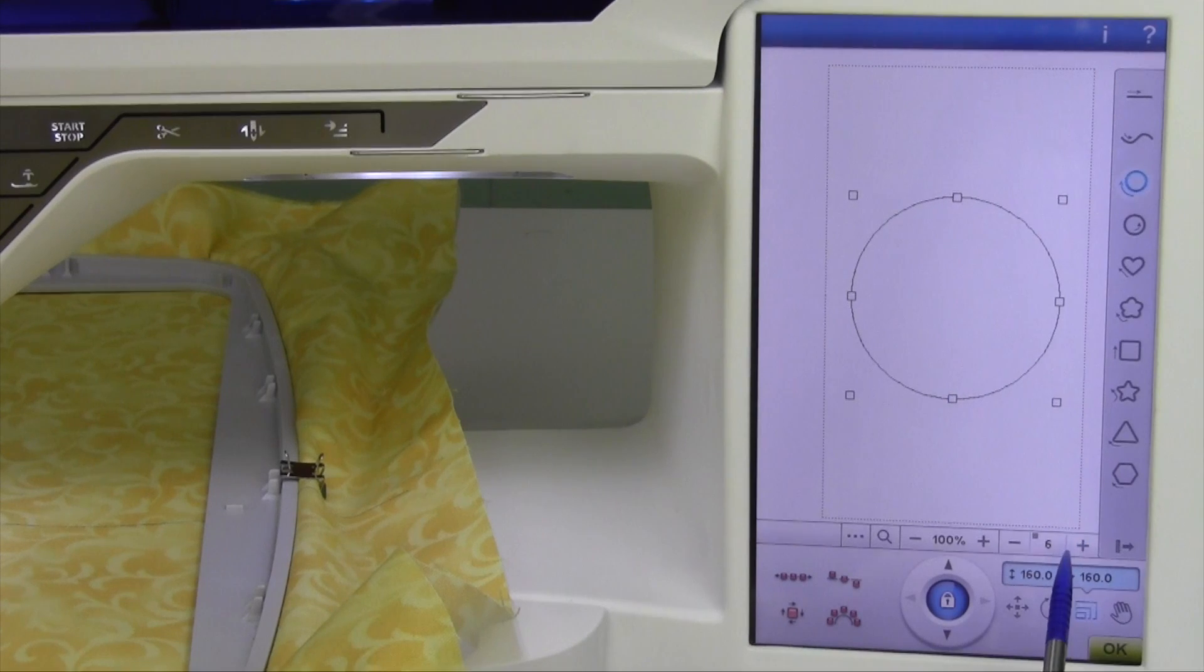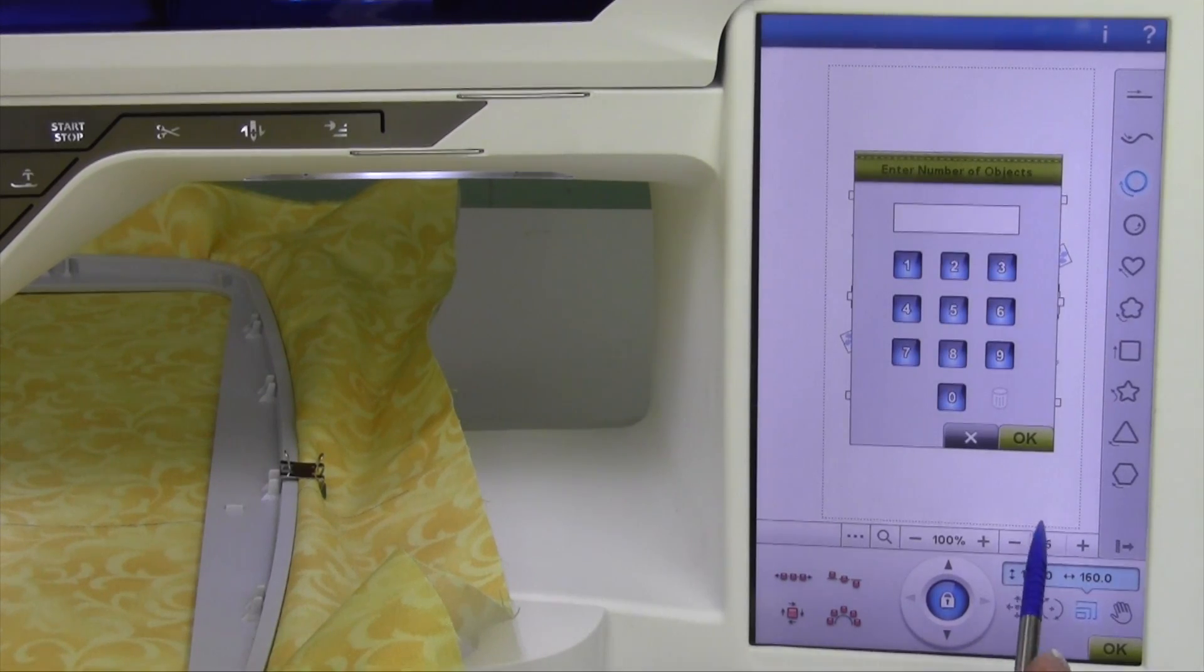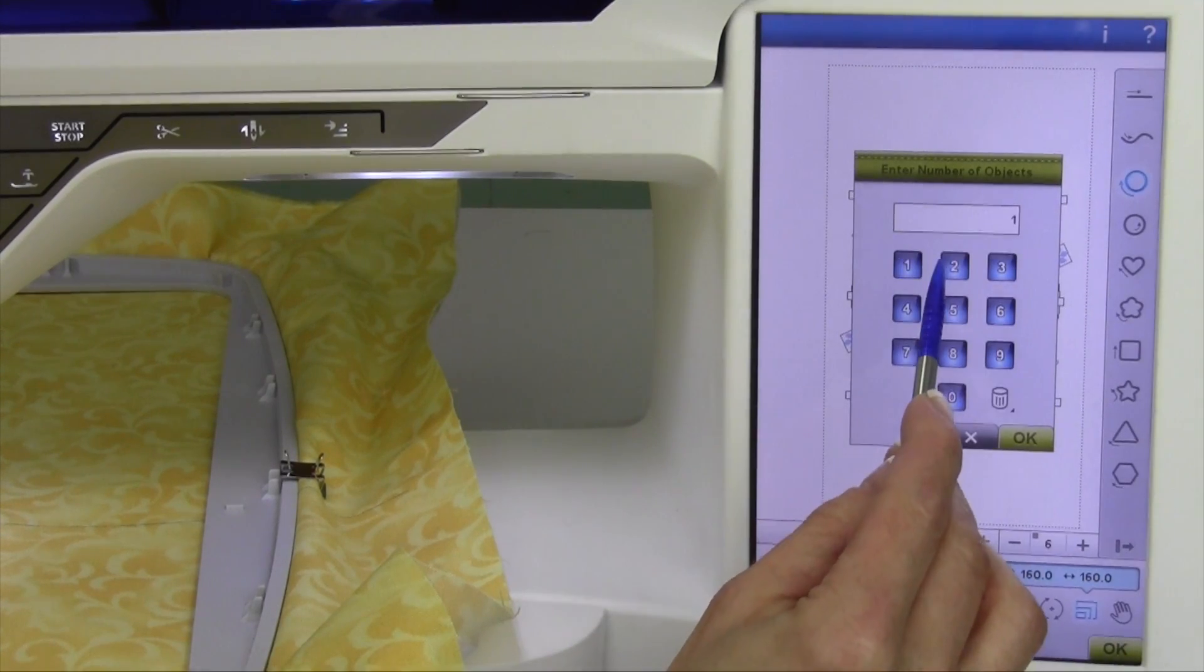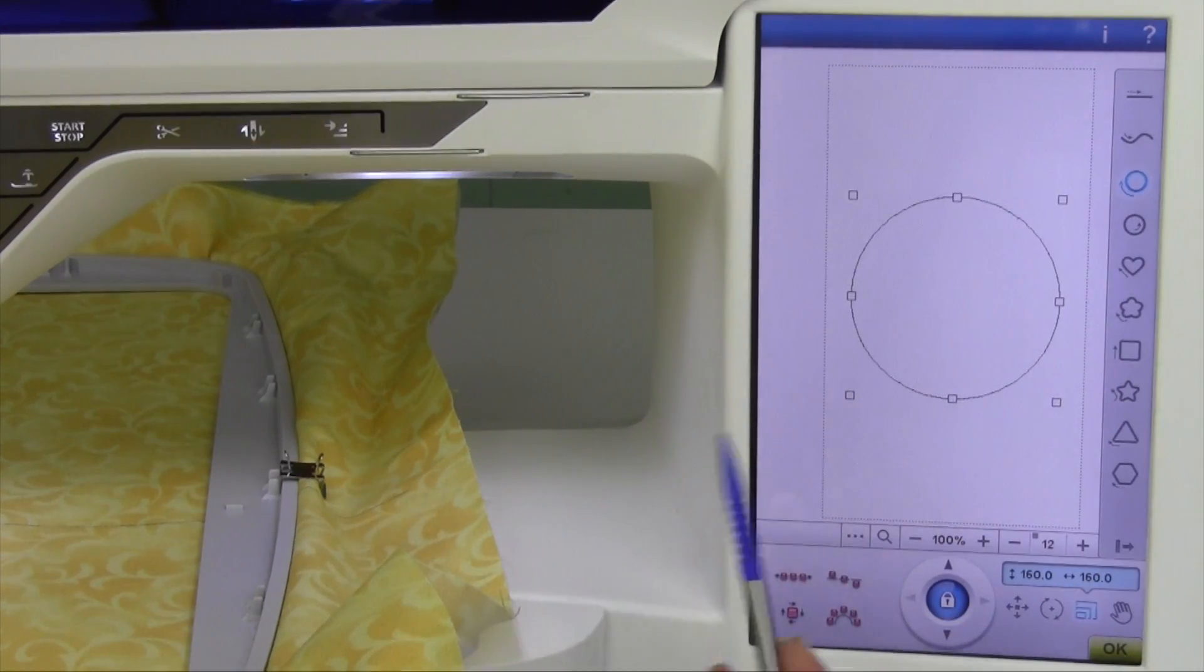So five and six. Well what if we wanted 12? Instead of doing plus, touch where the six is. There's a little picture of a keyboard, and we could type in 12. I was thinking 24, but 12 is a nice amount.